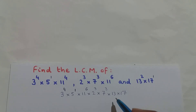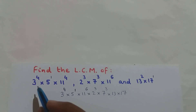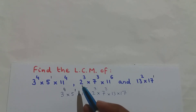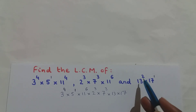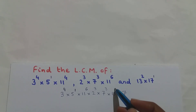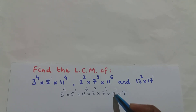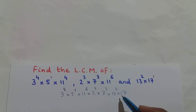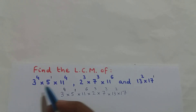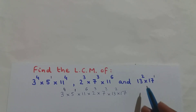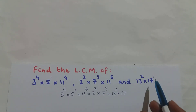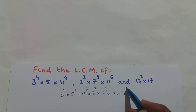What is the exponent of base 13? Base 13 doesn't occur in the first or second expressions. In the third expression I have 13 squared, so the exponent of base 13 is 2. What is the exponent of base 17? Base 17 doesn't occur in the first or second expressions. In the third expression I have 17 raised to the power of 1, so the exponent of base 17 is 1. And this is your answer for the question.